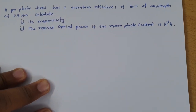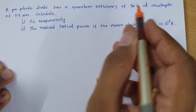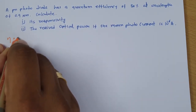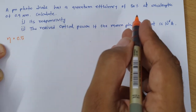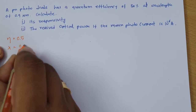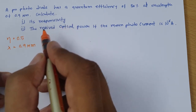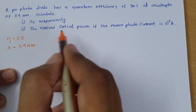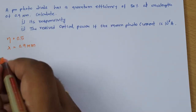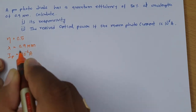Let us have one more problem to make things clearer. In the second problem, a PN diode has a quantum efficiency of 50%, i.e., η = 0.5, at a wavelength of 0.9 micrometers. We need to calculate the responsivity and the received optical power if the photocurrent is 10⁻⁶ amperes.